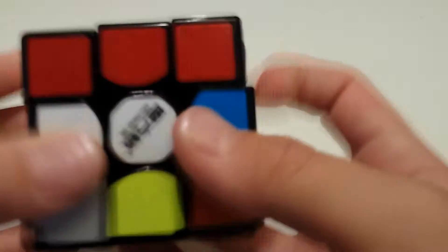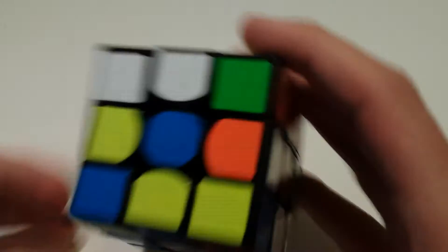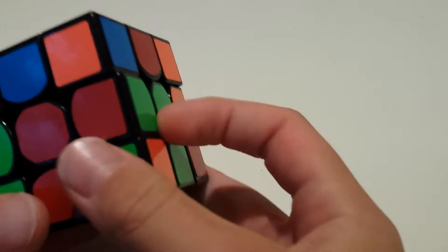So I'm just going to scramble the cube and show you an example solve. Okay. So the first thing you do is you just get a cross like normal, like you would always do. So, just like that.